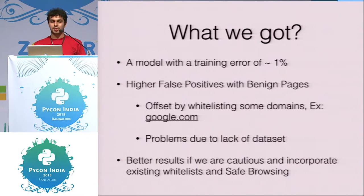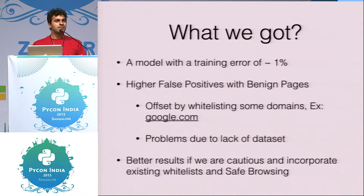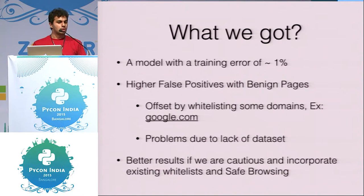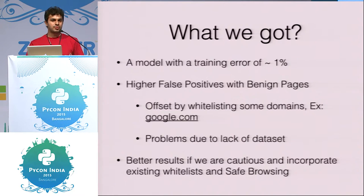We can't easily get more benign pages because there are only so many legitimate services to defend against. There were about 35–37% false positives on benign URLs misclassified as malicious, which was quickly offset with whitelisting. Typically, going to google.com or docs.google.com is relatively safe. Combining whitelisting with trusted sites can give far better results.